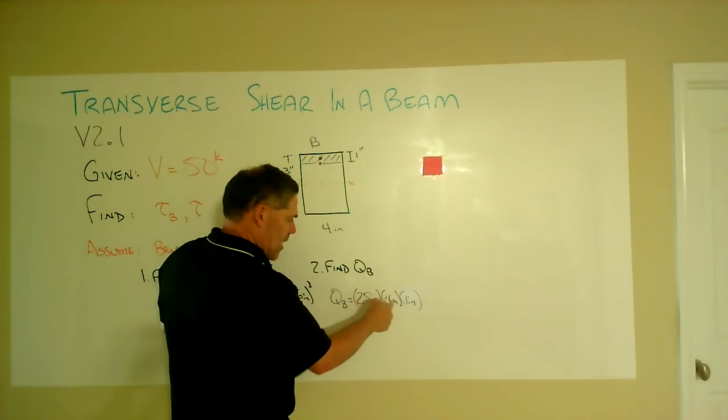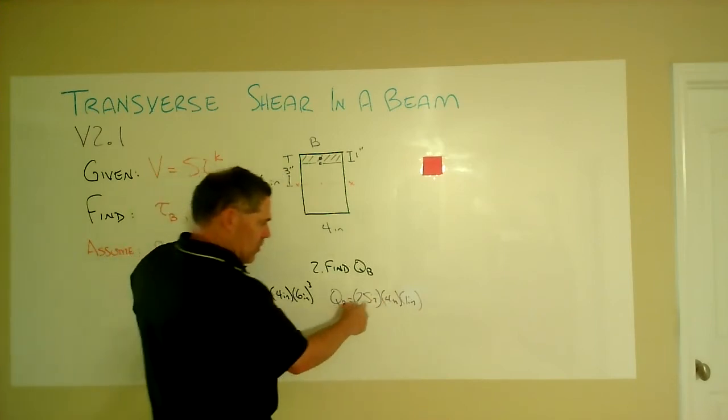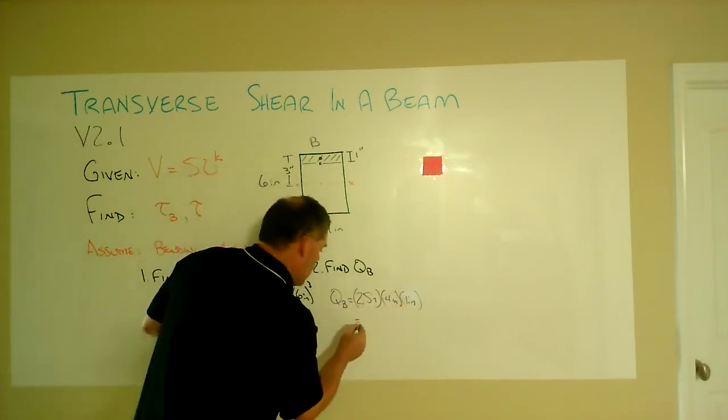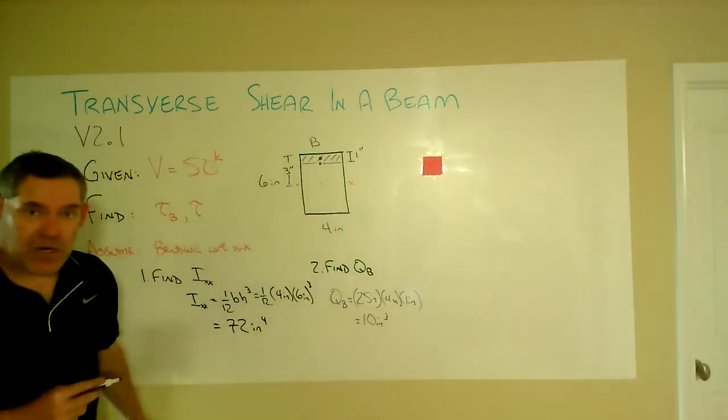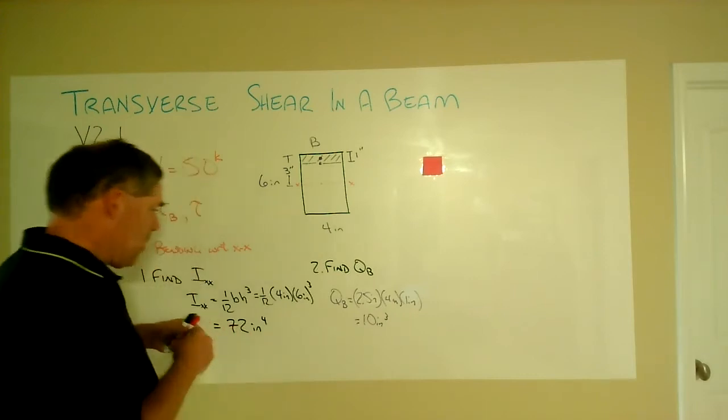And that looks to me like two and a half times four. Well, two times four is eight and another half would be another two. So that would be 10 cubic inches for the Q_B.